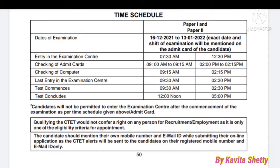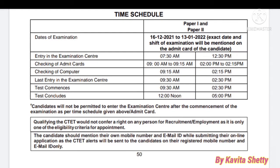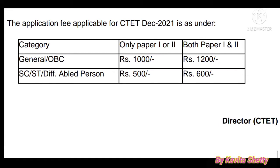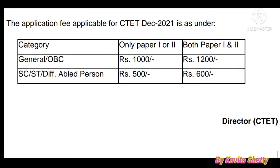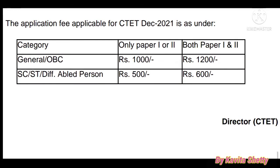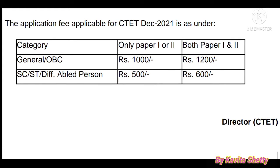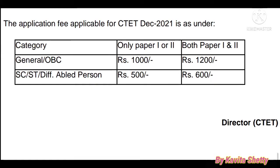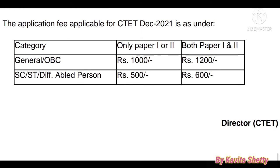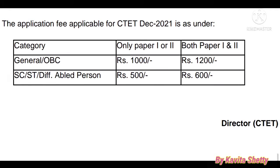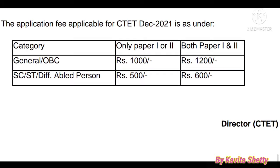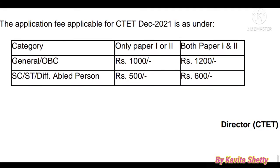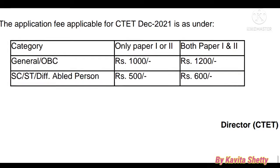For the application fee for CTET December 2021: General or OBC candidates pay ₹1000 for only Paper 1 or Paper 2, while SC/ST or differently-abled persons pay ₹500 for either paper. For both Paper 1 and Paper 2, General or OBC candidates pay ₹1200, while SC/ST and differently-abled persons pay ₹600.